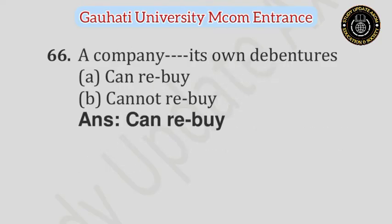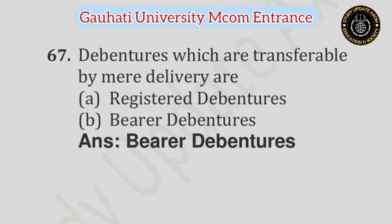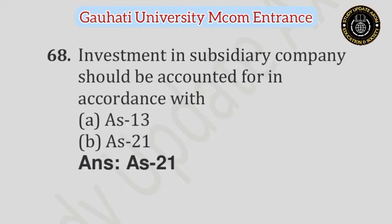Question number 66: A company can rebuy its own debentures — Option A: Can rebuy, Option B: Cannot rebuy. Answer is Can rebuy. Question number 67: Debentures which are transferable by mere delivery are — Option A: Registered debentures, Option B: Bearer debentures. Answer is Bearer debentures. Question number 68: Investment in subsidiary company should be accounted for in accordance with — Option A: AS 13, Option B: AS 21. Answer is AS 21.